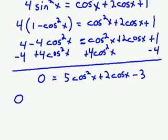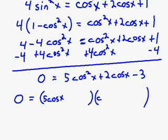I'm going to try and factor this. Hopefully it will factor. Write down two parentheses. I know the first terms have to be 5 cosine x and cosine x.